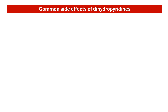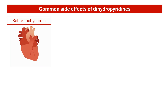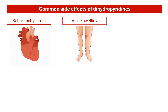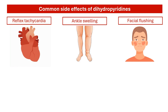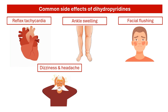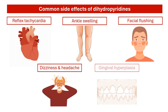Although generally well-tolerated, dihydropyridines are associated with some side effects. This group of drugs, especially the short-acting ones, can cause reflex tachycardia, a rather uncomfortable sensation of the heart pounding. Another common side effect is ankle swelling, which results from increased leakage of fluid from blood vessels. Dihydropyridine-mediated vasodilation is also responsible for other side effects such as facial flushing, dizziness, and headaches. Although rare, these drugs can also cause gingival hyperplasia, or enlargement of the gums.